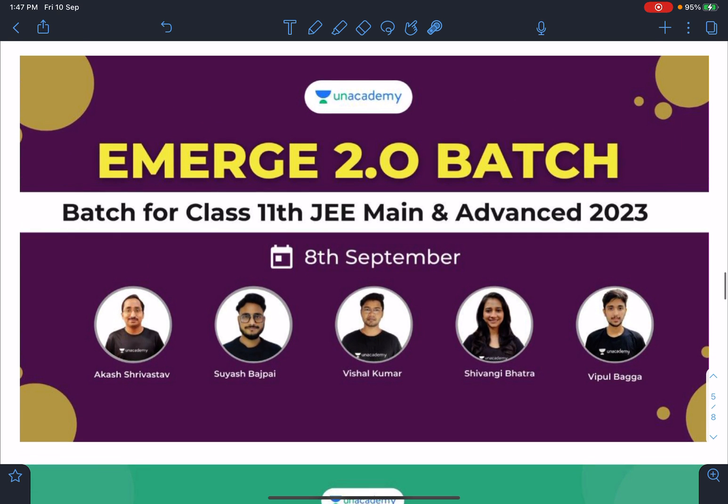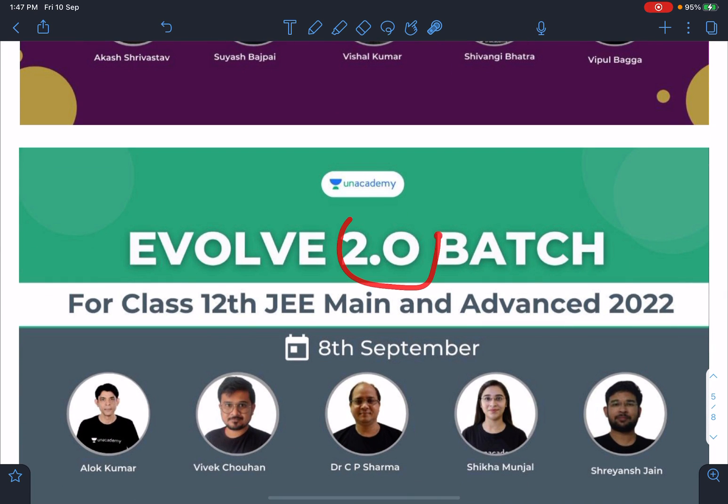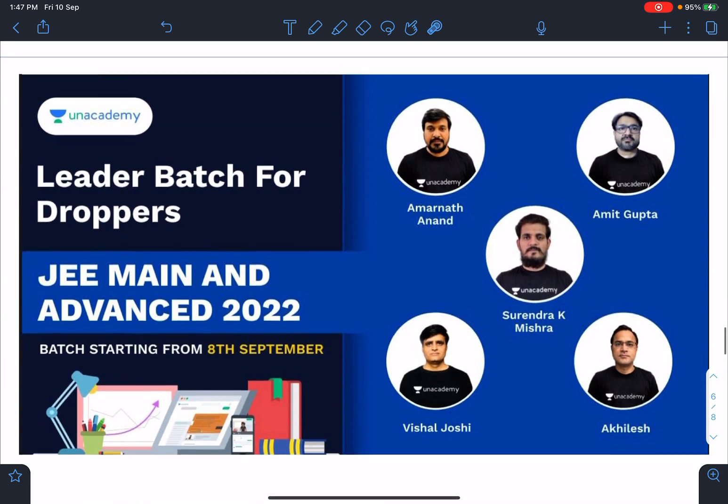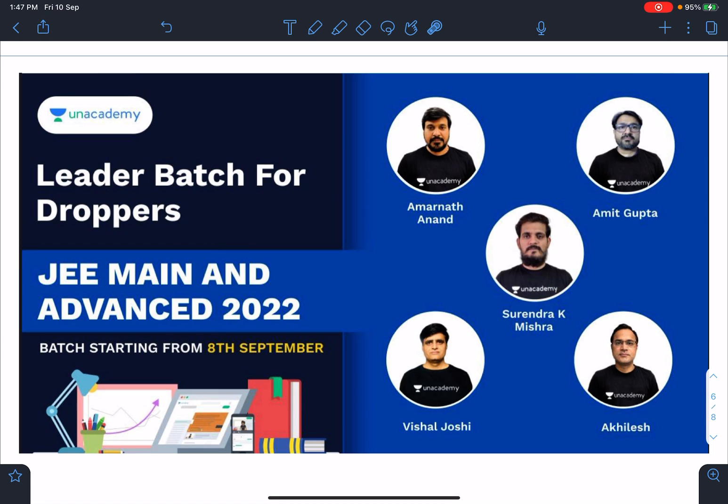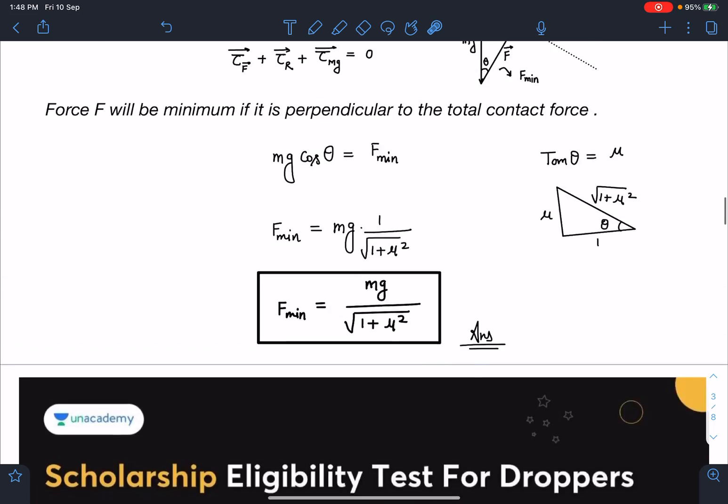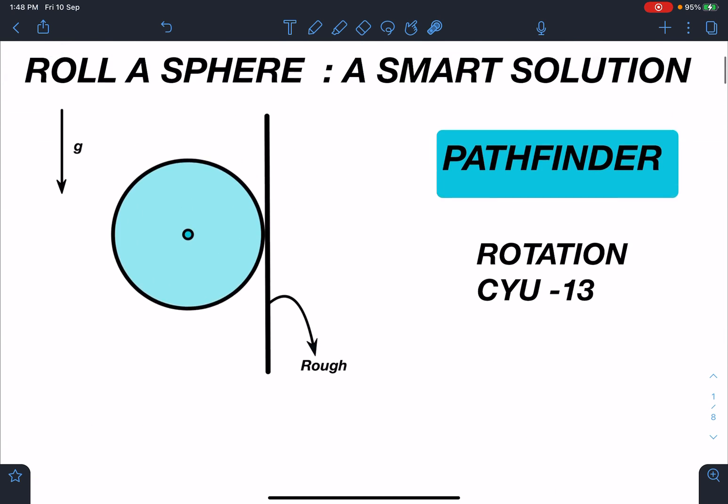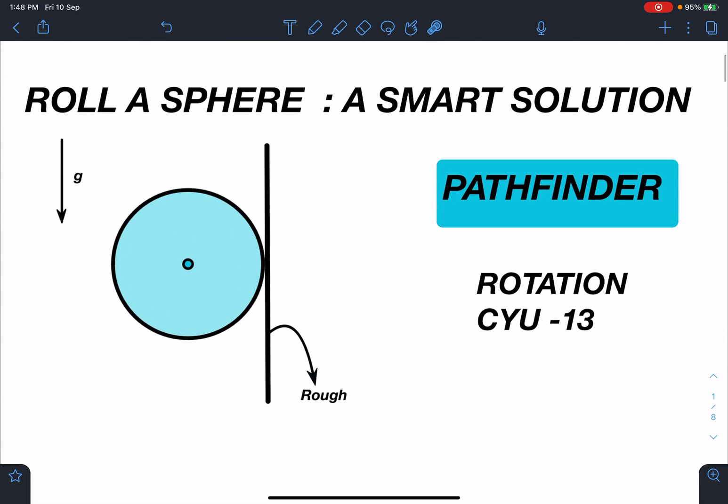These are the upcoming batches. 8th September Emerge 2.0 batch has started. And similarly, Vault 2.0 has started on 8th September. And another batch for droppers leader batch has also started on 8th of September. Those who are interested can definitely look up to these. I hope you have enjoyed this solution. It's a conceptually very rich problem in my opinion. If you have got the idea, please like a video, share this video with other people. I will be coming up very soon with another one. Thank you.